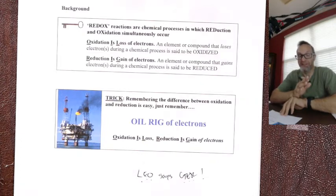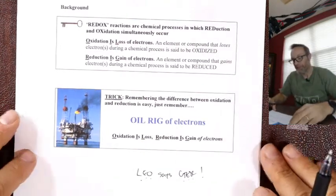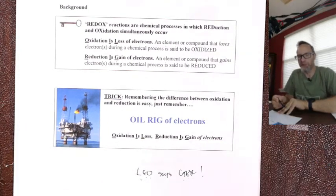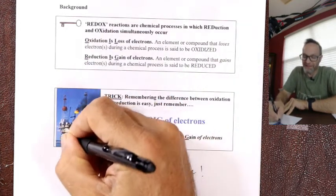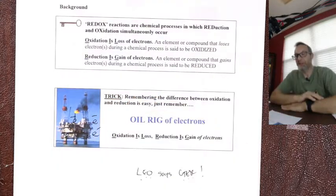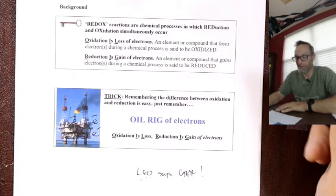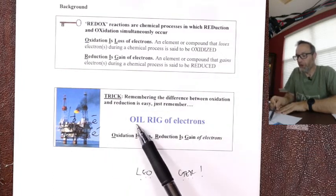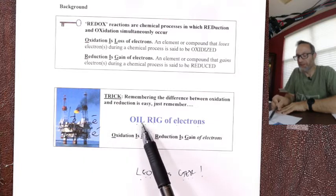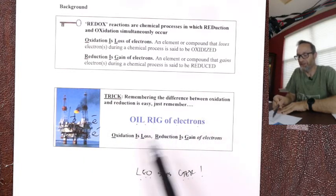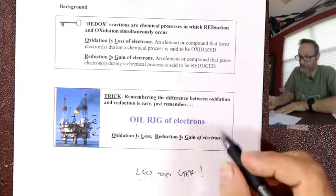If you haven't learned a mnemonic yet, here's my preferred one — it's a bit more macho. Think of the Gulf of Mexico and an oil rig staffed by electrons. The sillier the idea, the easier it is to remember. OIL RIG: oxidation is loss, reduction is gain of electrons.